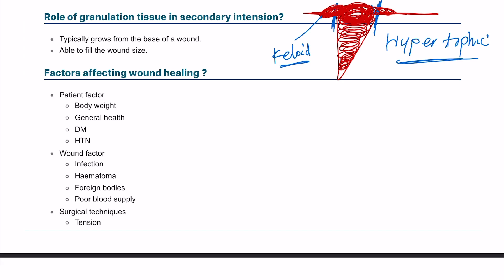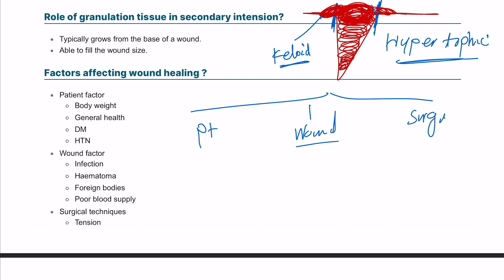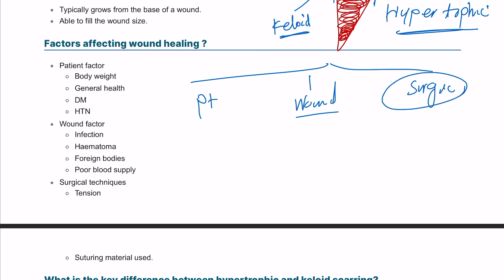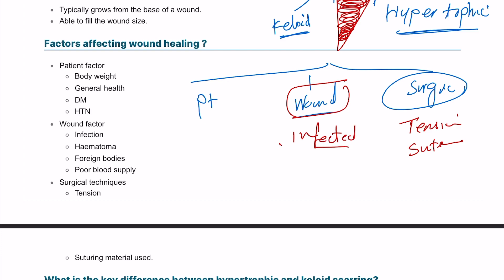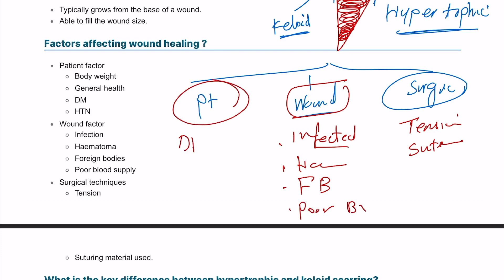Wound healing characteristics depend on the patient, the wound itself, and the surgical technique used. Surgical technique factors include tension and type of sutures used. Wound factors include whether the wound was infected, presence of hematoma, foreign body, or poor blood supply. Patient factors include diabetes, obesity, hypertension, and general nutritional status.